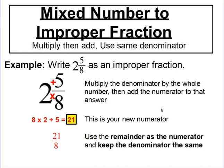To change a mixed number into an improper fraction, we do the same problem backwards. For 2 and 5 eighths, take the denominator and multiply it by the whole number: 8 times 2 is 16. Then add the numerator: 16 plus 5 is 21. That's our numerator, and the denominator stays 8, giving us 21 over 8. So we're just multiplying and then adding — the opposite of what we did before.